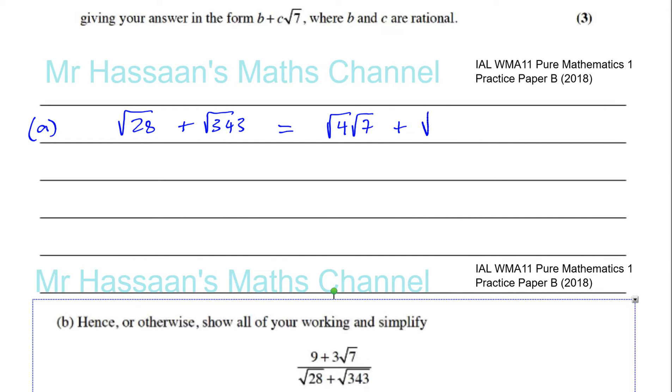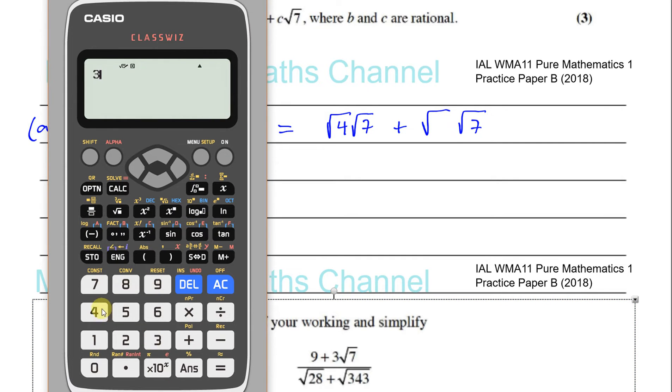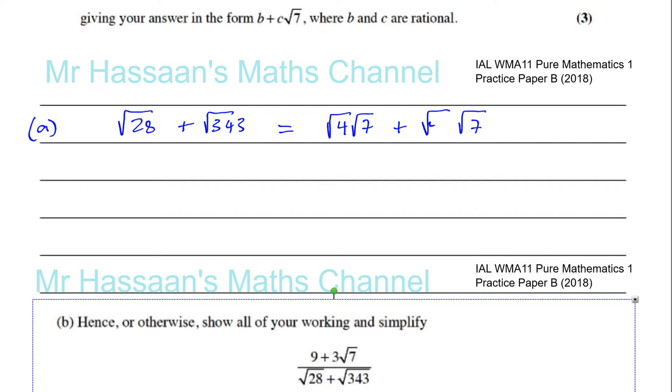So you know that 4 times 7 is 28, so root 28 can be written as root 4 times root 7. And 343 divided by 7 gives us 49, and that's a perfect square, so it works out perfectly fine. So that's going to give you 2 root 7, and that's going to give you 7 times root 7, and 2 root 7 plus 7 root 7 is 9 root 7. And there we have our answer.